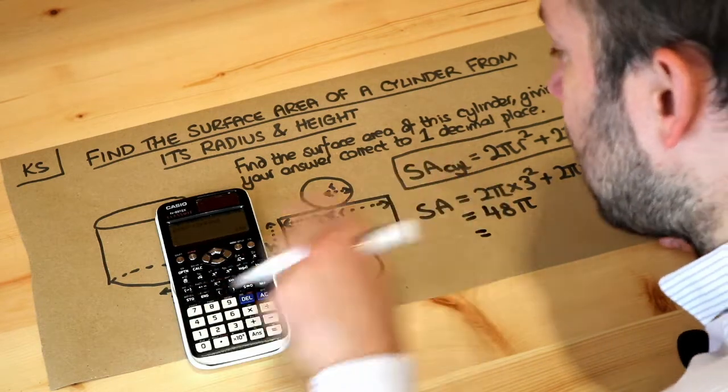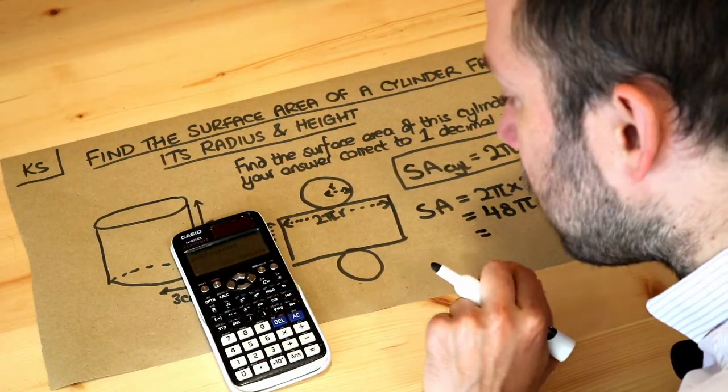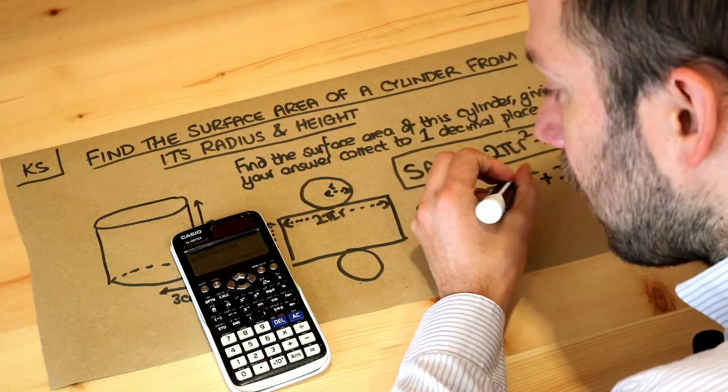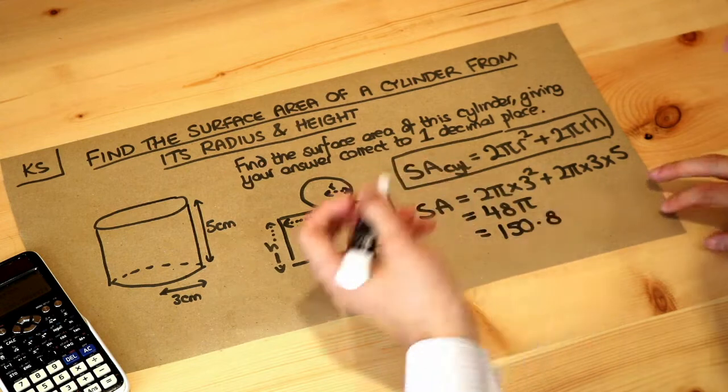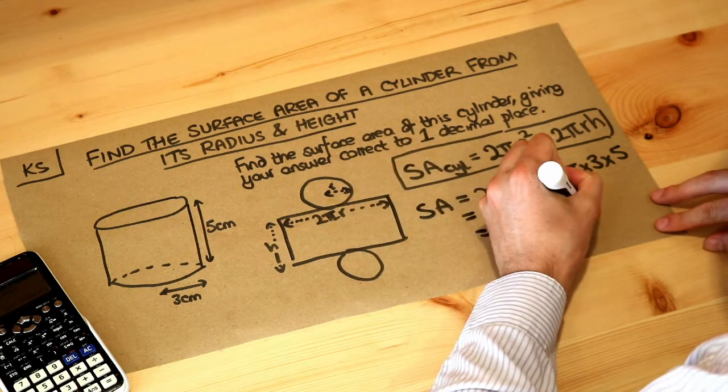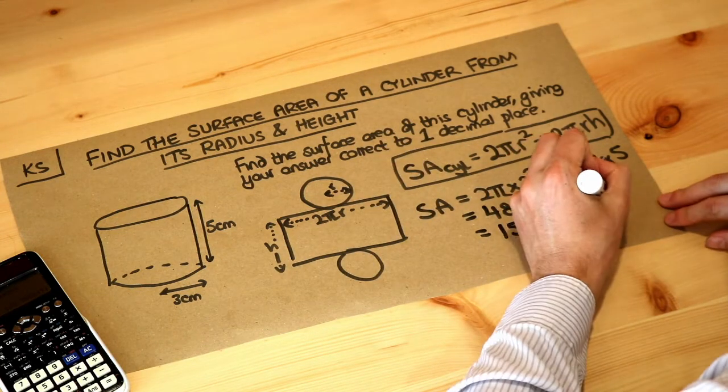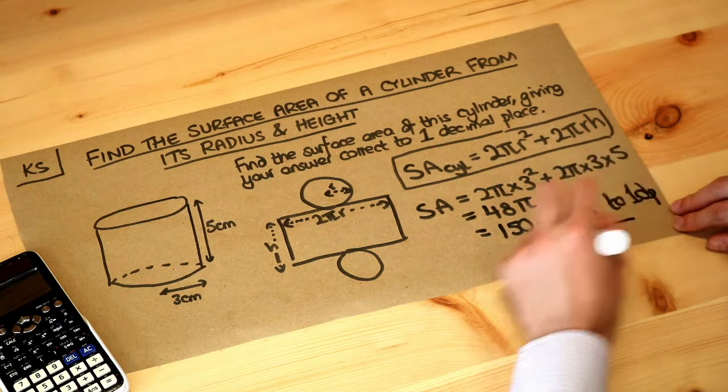But if you press the SD key it will give it as a decimal of an exact form and that gives me 150.8. Now all these measurements are in centimeters so the unit of volume will be centimeters cubed and that was to one decimal place. So that's the final answer.